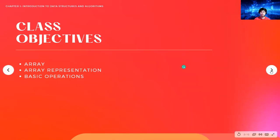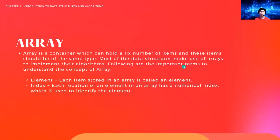So let's start with an array. What is an array? An array is a container which can hold a fixed number of items, and these items should be of the same type. Most data structures make use of arrays to implement their algorithms. The important terms to understand are: element — each item stored in an array is called an element — and index — each location of an element has a numerical index used to identify it.